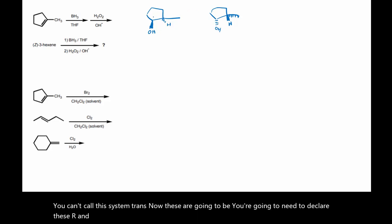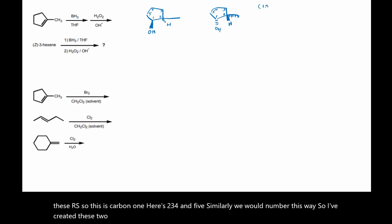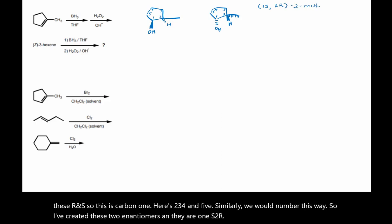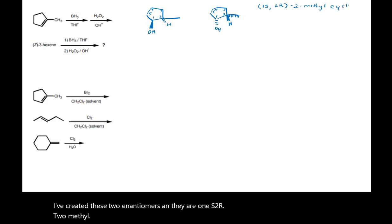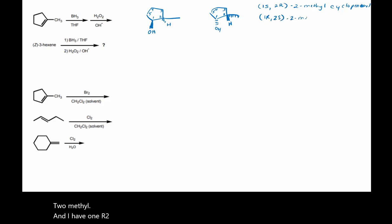So this is carbon 1, here's 2, 3, 4, and 5. Similarly we would number this way. So I've created these two enantiomers and they are 1S,2R-2-methylcyclopentanol and 1R,2S-2-methylcyclopentanol.